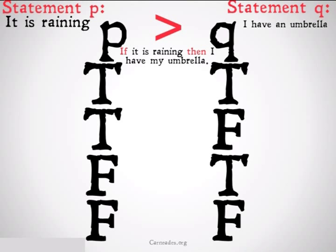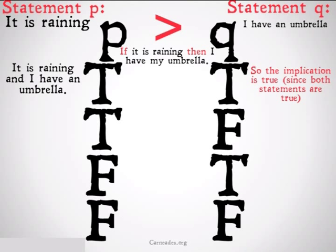We fill in our truth table as normal under P and under Q. Let's see what we can fill under the implication sign. So, it is raining, and I have my umbrella. That seems to just fulfill the implication. So, the implication is going to be true. Both statements are true. Makes sense.